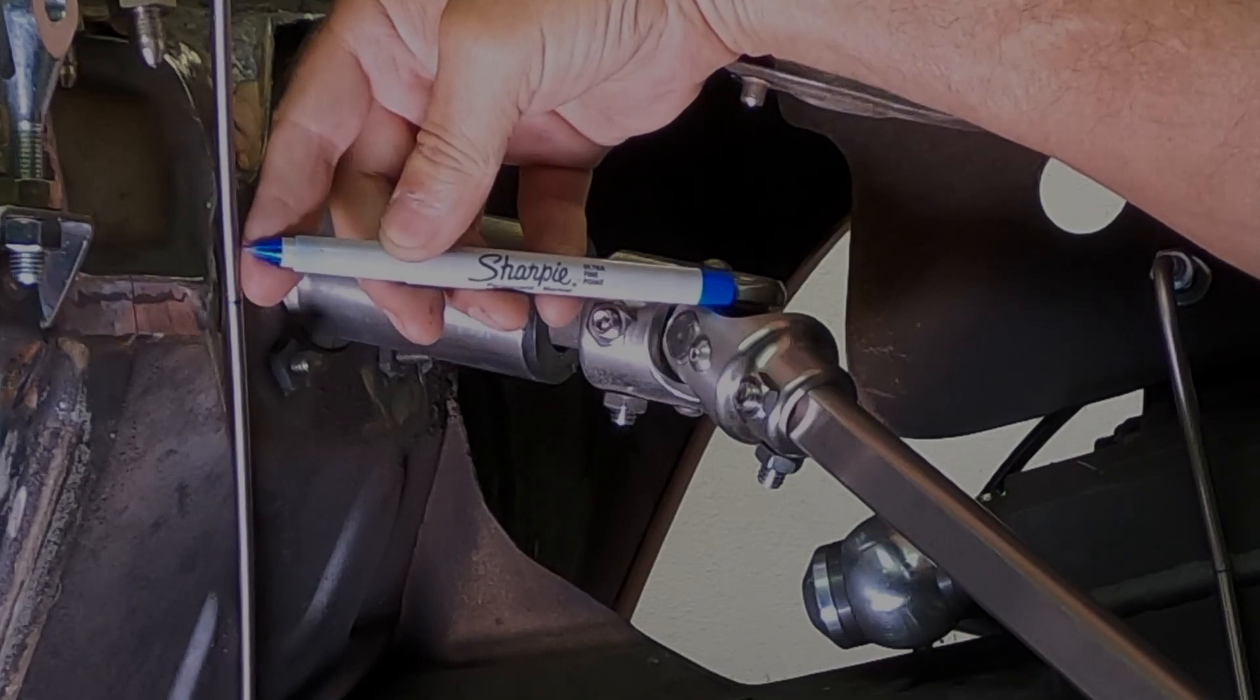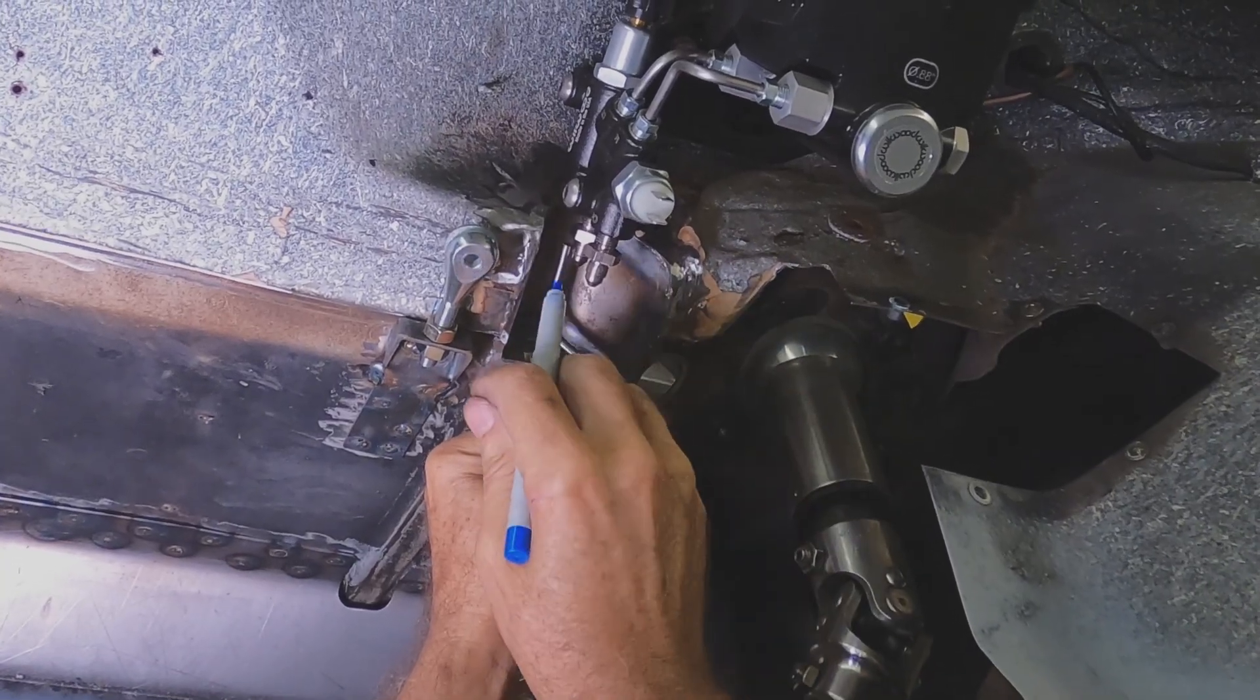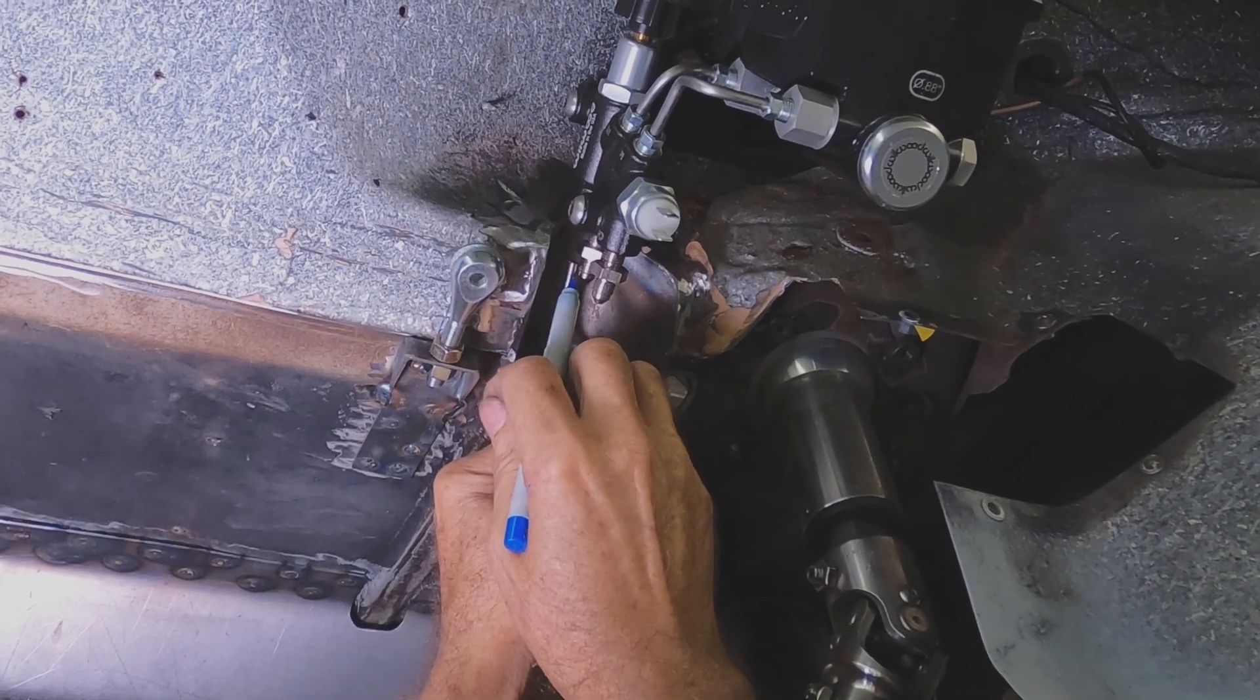To determine which way to twist, I mark a line along the tube opposite of the way it is supposed to twist. This mark is the final cut to size.